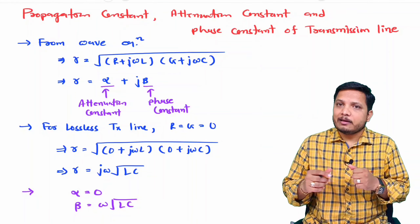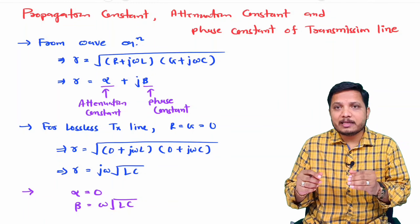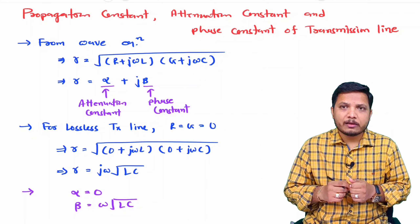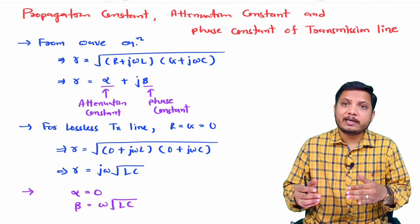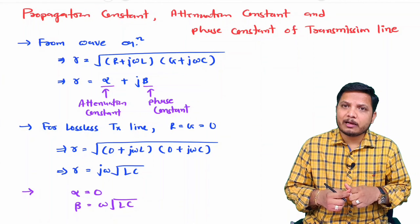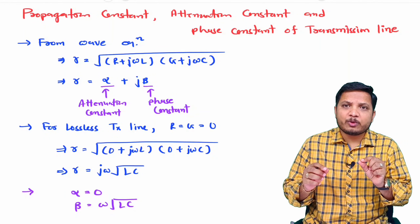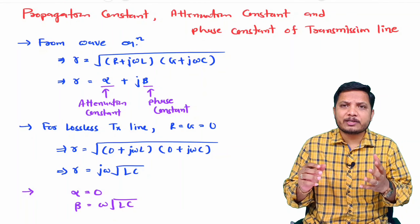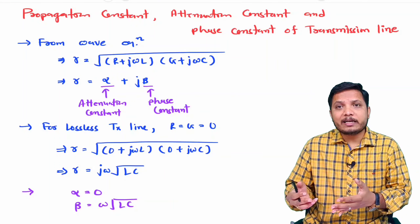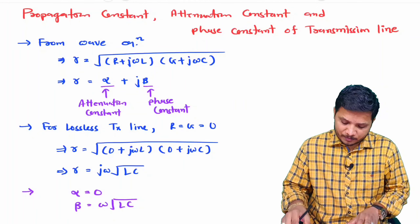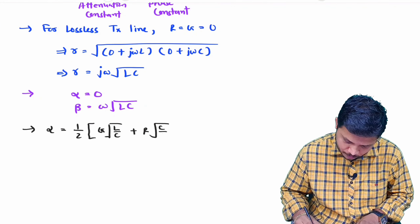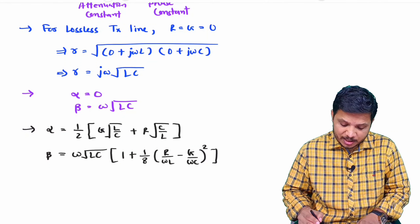Some students have asked about deriving alpha and beta separately. However, you do not need to remember those tricky formulas. By using gamma = √[(R + jωL)(G + jωC)], we can easily identify the values of alpha and beta using a calculator. There is no need to memorize those two formulas, since you can directly solve questions from this main equation. In future videos, examples will be solved without using the separate formulas.